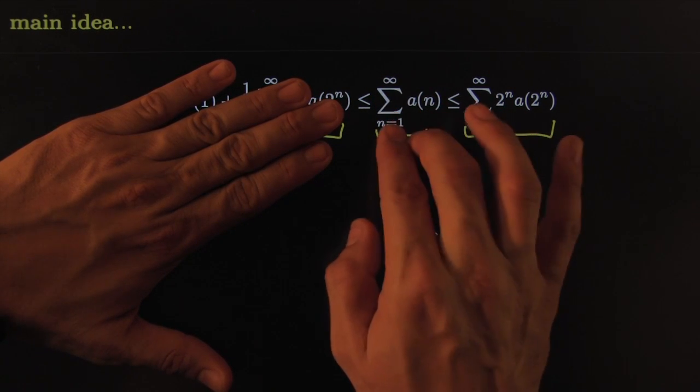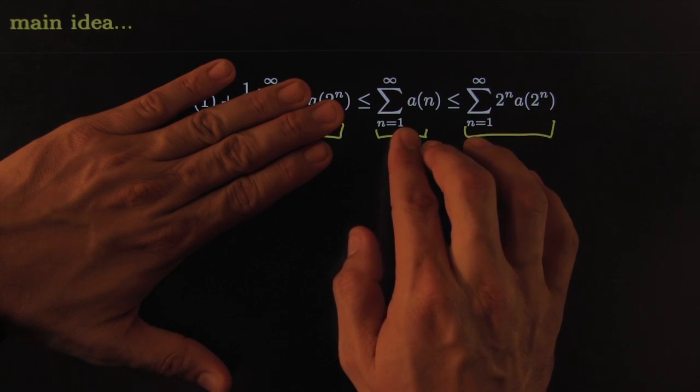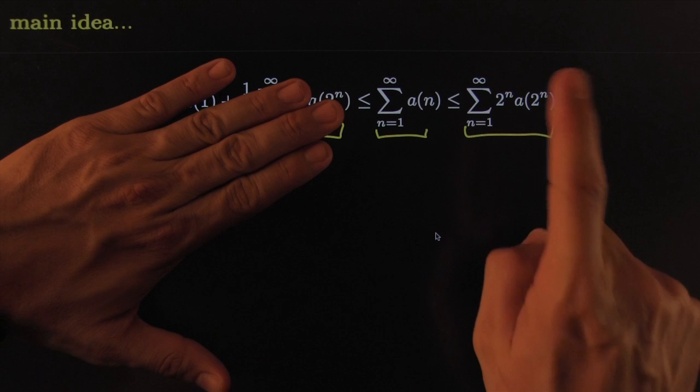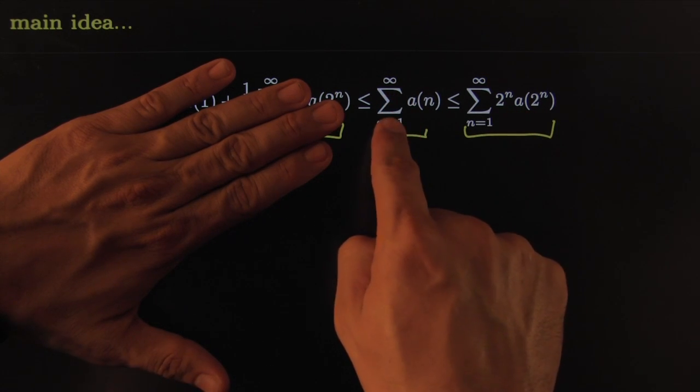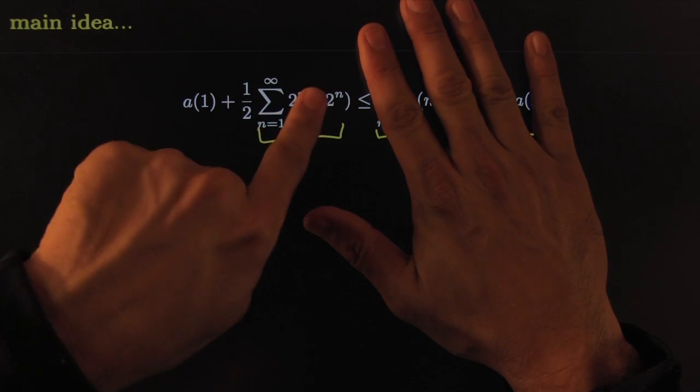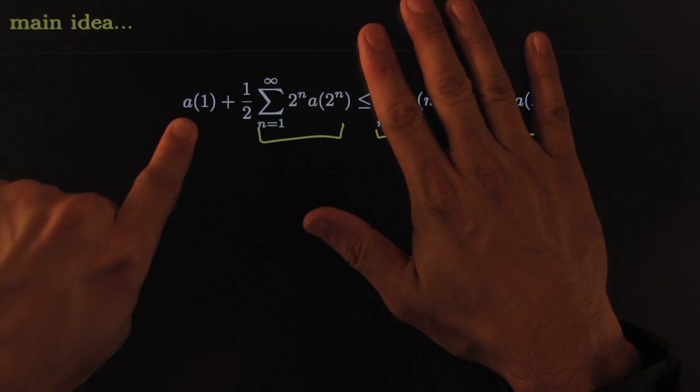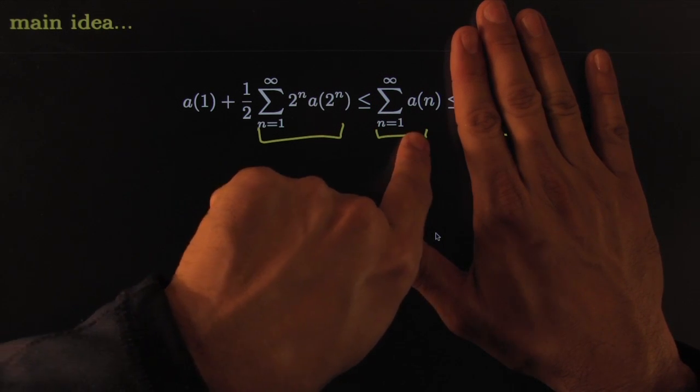So this one must be finite, because the partial sum sequence must be bounded and monotone, so of course it converges. So when this converges, it's finite, this one's even smaller, it's more finite, forces that to converge. On the other hand, if this one diverges, that means this is infinite, times a half is still infinite, plus a(1), that's still infinite, and this one's even larger, forcing it to diverge as well.